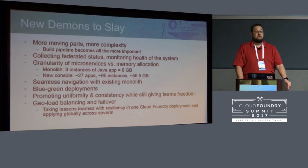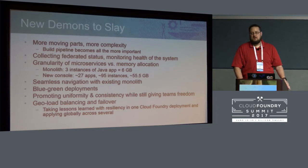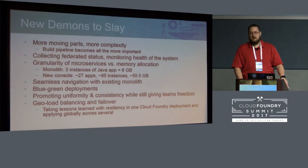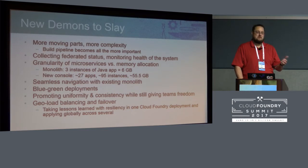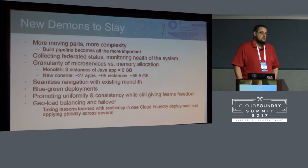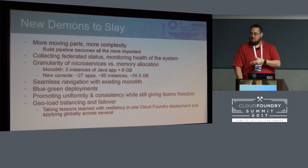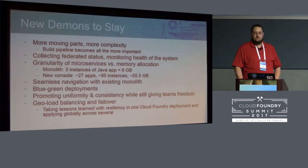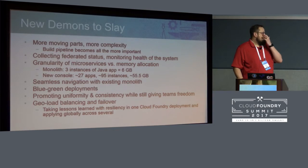We ended up having an on-deck version and a production version of the apps, so we had two versions of all microservices deployed, and we'd do a blue-green swap on the proxy for each of them — basically routing suddenly to a whole new set of microservices. We want to be more granular and do blue-green swaps at the individual microservice level, which is still something we're working on. Promoting uniformity and consistency while still giving teams freedom is a big ongoing challenge — we have UI designers across many teams with differing views on how the UI should look and behave.